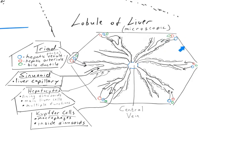From each corner triad of the liver lobule, the blood coming in from the hepatic portal venule and from the hepatic arteriole mix as they enter into these very specialized liver capillaries called sinusoids. As that blood mixes, it provides oxygenated blood from the hepatic artery to those cells, but it also provides that nutrient-rich and potentially toxin-laden blood to the hepatocytes, which are the liver cells surrounding the sinusoids.